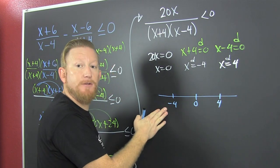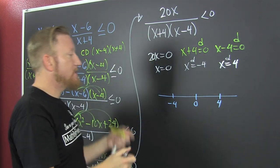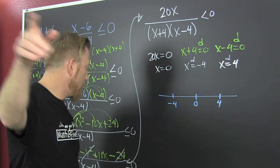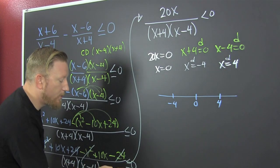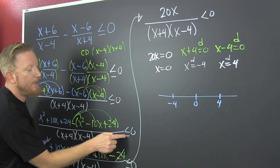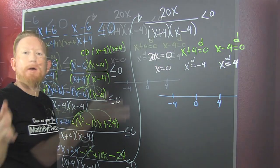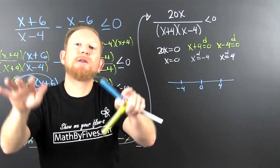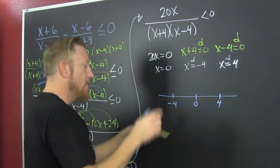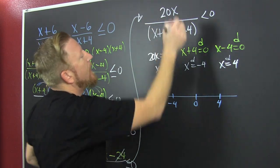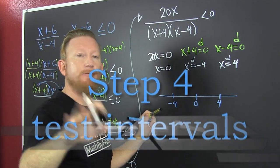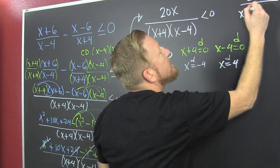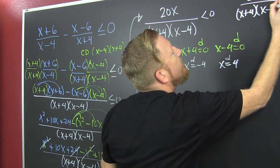Those are the critical values in your rational expression that we are gonna test to see whether or not our function's above the line or below the line. We're looking to see where our function is below zero. We are testing it in this guy: 20x divided by x plus 4 times x minus 4.